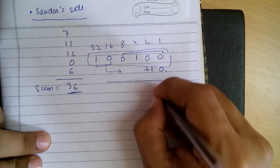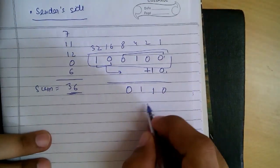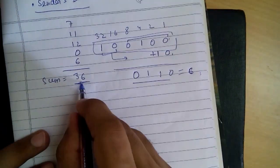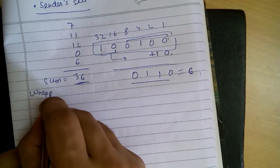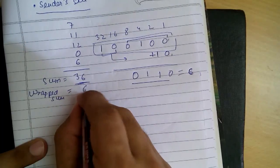So we get 0110. This is 6. Our sum was 36, and now our wrapped sum equals 6.